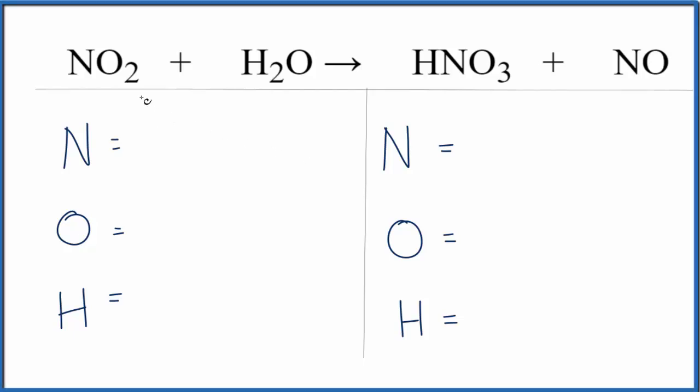So this is a bit of a challenging equation. We have NO2 and H2O, and that's giving us this HNO3 plus NO. Let's add the atoms up on each side.